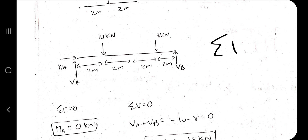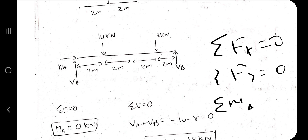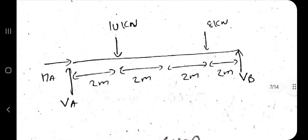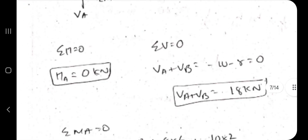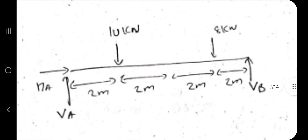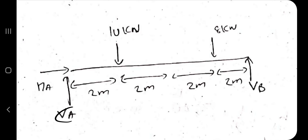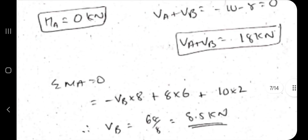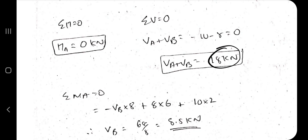As you know, the three equilibrium conditions are: ΣFx = 0, ΣFy = 0, and moment about any axis = 0. Considering ΣFx = 0: only HA acts in the x-direction, so HA = 0 kN. Considering ΣFy = 0: VA + VB − 10 − 8 = 0, which gives VA + VB = 18 kN. This is our first equation.